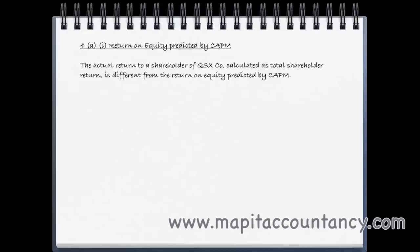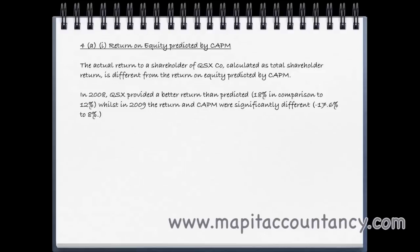CAPM predicted 12% growth in 2008 and 8% growth in 2009. We can see that the actual total shareholder return is clearly different from what CAPM predicted. In 2008, we provided a better return — 18% actual versus 12% predicted. However in 2009, CAPM predicted 8% growth but we got minus 17.6%. So why could it be different?